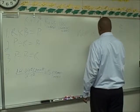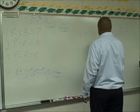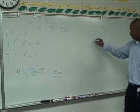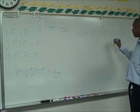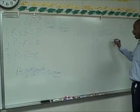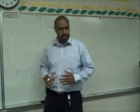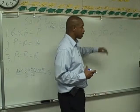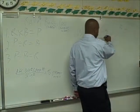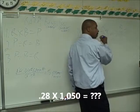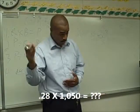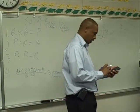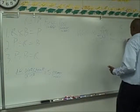You put the decimal — .28. And then times 1,050. Mabel did something very good and that's easy to miss: 28% is not a number. You have to convert that percent to a decimal by dropping the percent sign and moving the decimal two spaces to the left. So 28% becomes .28. So 0.28 times 1,050 equals 294. And that's our part.